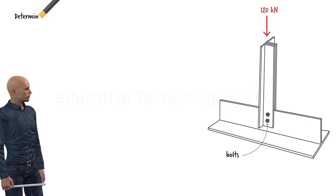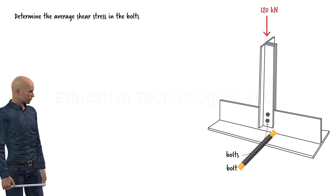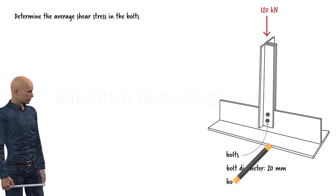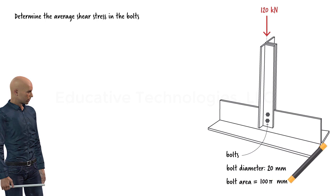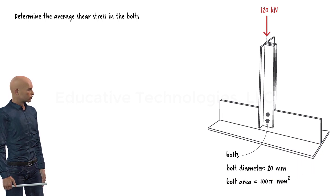We wish to determine the average shear stress in the bolts. Given a bolt diameter of 20 millimeters, its cross sectional area can be written as 100π square millimeters. Since the compression member consists of two angles, we can assume that each angle carries half the force.